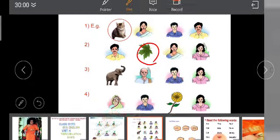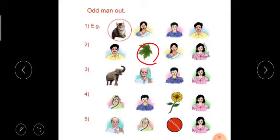First one: Elephant, Grandfather, Brother, Sister. Which one we have to remove? We have to remove elephant. Grandmother, Brother, Flower, Sister. Which one we have to remove? We have to remove flower.